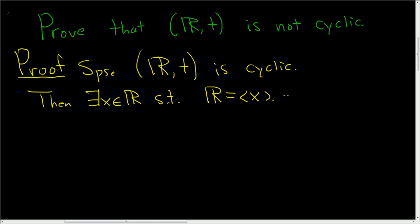So we have to reach a contradiction. We have to think of a real number that is not in this set. So first, let me clarify this notation. So note, R, which is generated by x, what is this set?